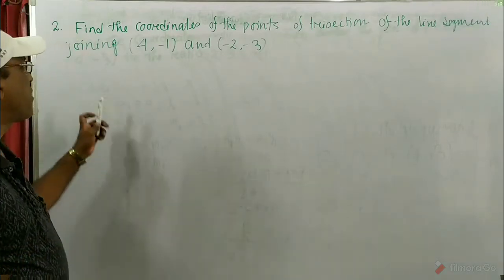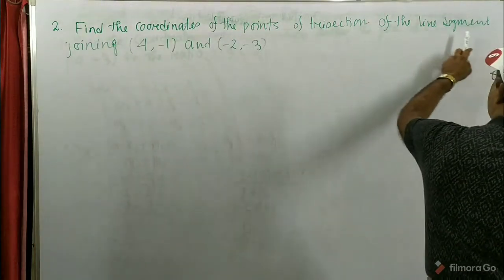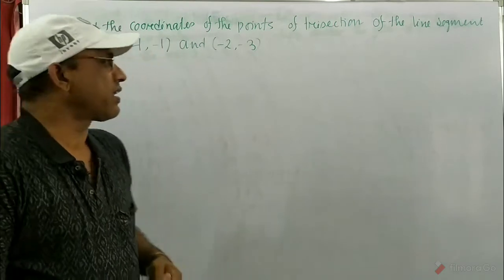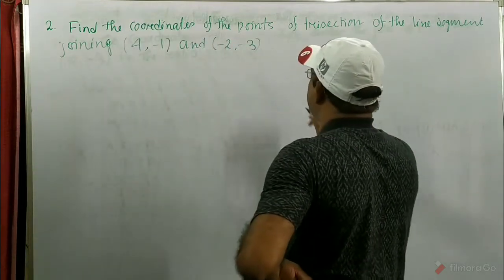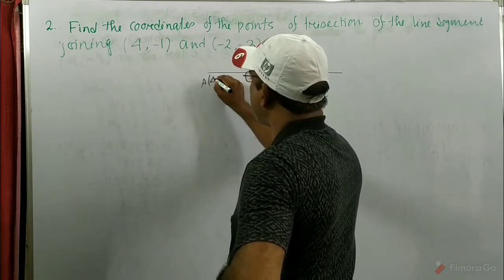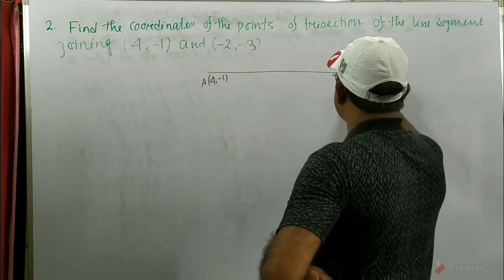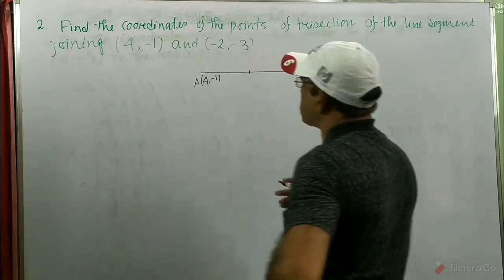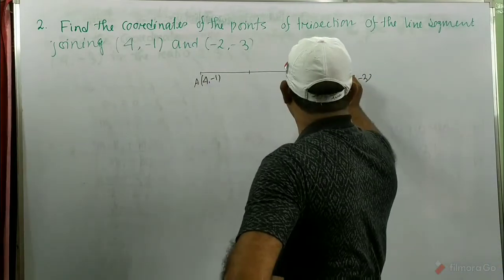Now we consider problem number 2. This is a very interesting and very easy problem. Find the coordinates of the points of trisection of the line segment joining (4, -1) and (-2, -3). Two points are given and if we join these two points, we get a line segment. So this line segment, we divide into 3 equal parts. Suppose this line segment is A — this is (4, -1) — and B, this is (-2, -3).